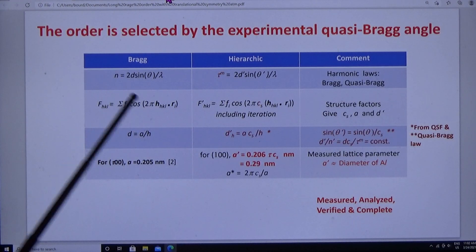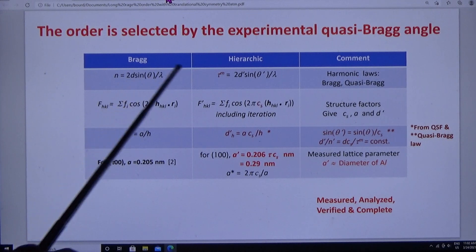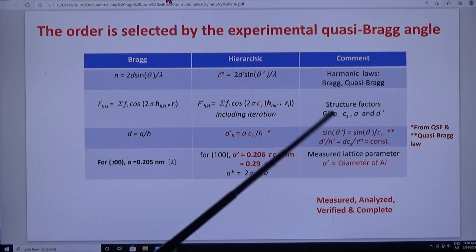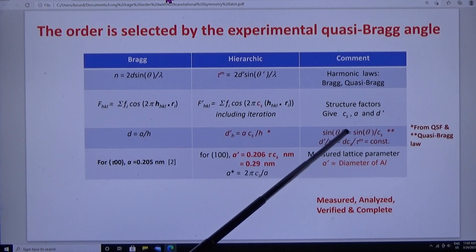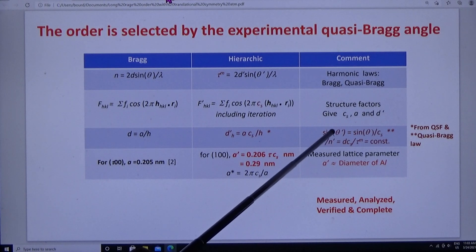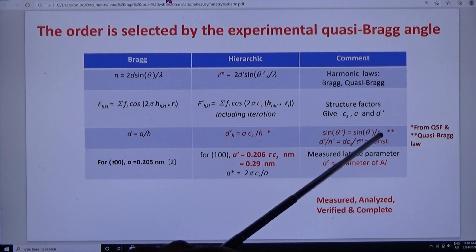So we can begin to sign up. Here's Bragg's law. Here's the quasi-Bragg law. And here's theta. The quasi-Bragg angle is equal to the Bragg angle divided by Cs.